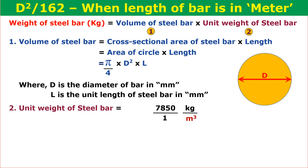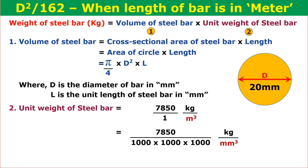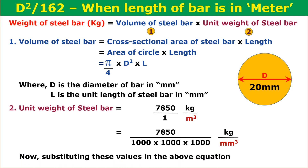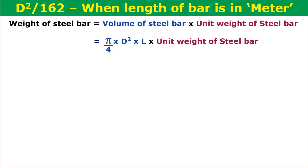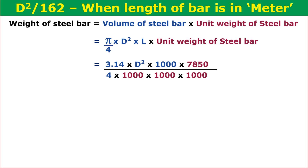The unit weight of steel bar is 7850 kg per meter cube. Since the diameter of the bar is in mm and the unit weight is in meter cube, we need to convert: 7850 divided by (1000 × 1000 × 1000) kg per mm cube. Substituting these values — weight equals (π/4) × d² × l × unit weight — we get 3.14 × d² × 1000 × 7850, divided by (4 × 1000 × 1000 × 1000), which gives 0.006162 d² kilograms per meter.